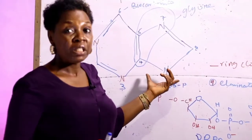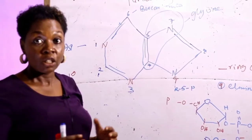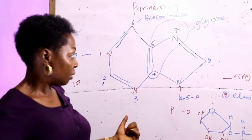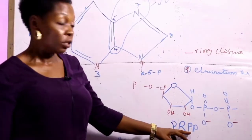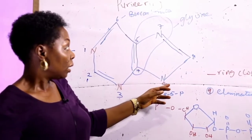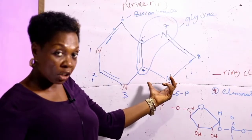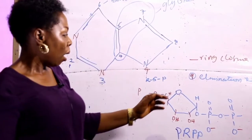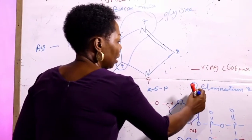The next reaction is the acquisition of N9. Remember, for the de novo synthesis, some of these molecules are sourced from precursor molecules like glycine, aspartate, tetrahydrofolate, and glutamine. Step two involves the acquisition of N9. This reaction involves the removal of the pyrophosphate group from the activated ribose sugar to form phosphoribosylamide, or what we call PRA.